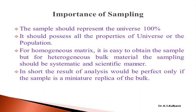So now you have an idea about sample and sampling. To select some part of your population which carries exact characteristics of your population — that is the meaning of sampling. The first importance is that the sample should represent the universe 100%, just like a class representative replicates your class very well and carries all your problems and queries to the teachers. Similarly, the sample should possess all the properties of your universe or population. For a homogeneous matrix it is easy to obtain the sample, but for heterogeneous bulk material the sampling should be done in a systematic and scientific manner.